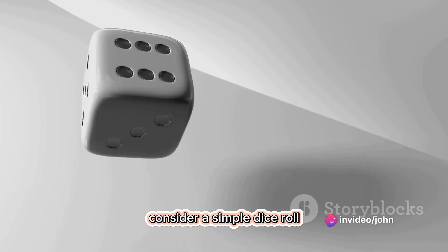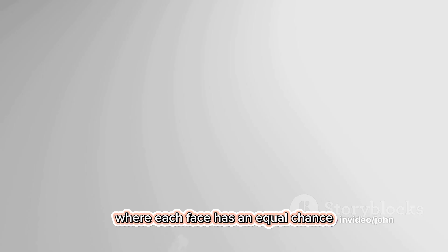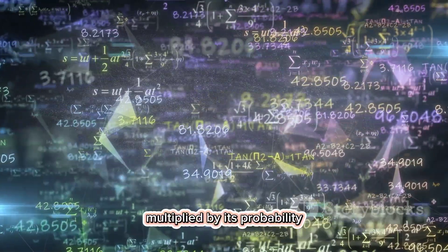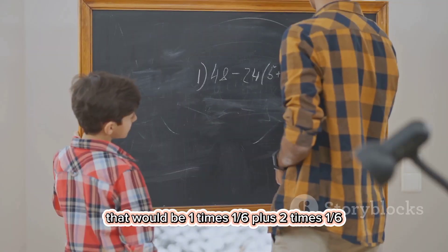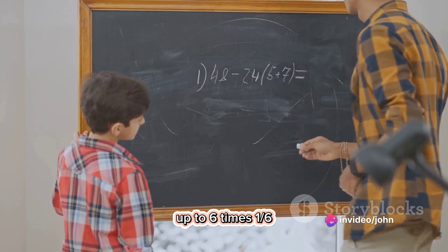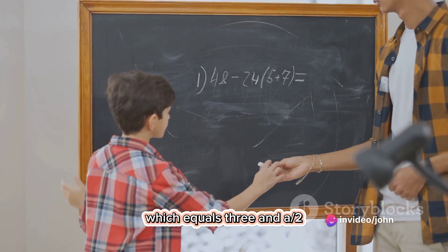Consider a simple dice roll, where each face has an equal chance one-sixth of appearing. The mean is the sum of each outcome multiplied by its probability. That would be one times one-sixth, plus two times one-sixth, up to six times one-sixth, which equals three and a half.